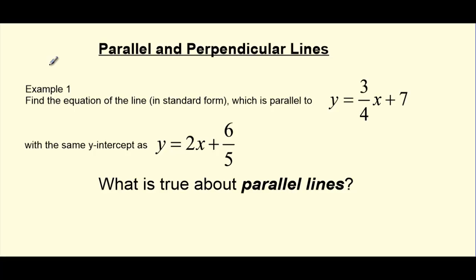Let's first start with an example involving parallel lines. Our example here is to find the equation of a line in standard form which is parallel to the line y equals 3 fourths x plus 7, and it has the same y-intercept as this line, y equals 2x plus 6 fifths.